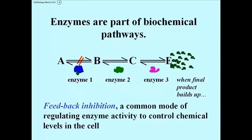It is a reversible phenomenon, so that when levels of E drop because the cell is using it for some purpose, the E molecule that is bound to enzyme 1 would actually come off, and then the pathway could resume at full speed.